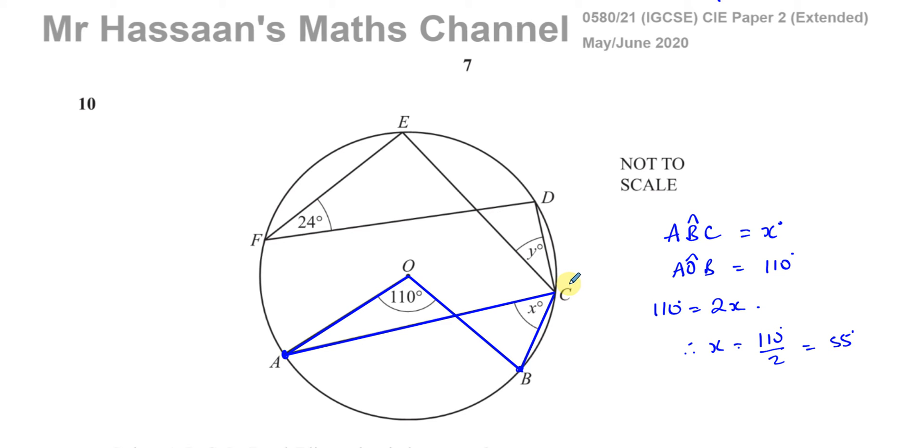Now we'll turn to angle Y. Now, you can do a very similar thing with angle Y. What I would do is I would take this page and I would turn it upside down so I can see angle Y in a similar kind of way to angle X. In the exam, I would turn it upside down and look at the angle like this. Because angle Y is going from D to C and then C to E.